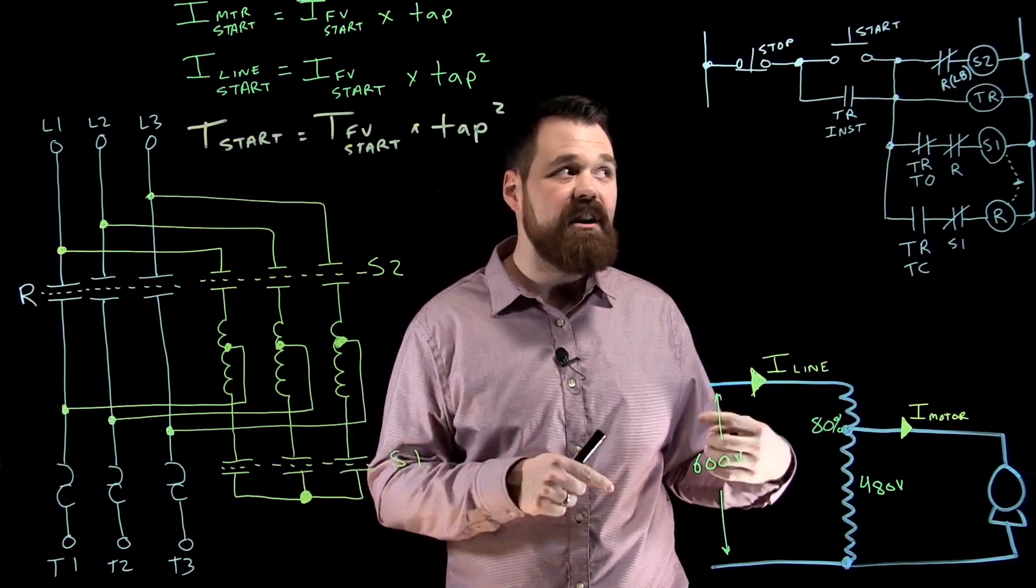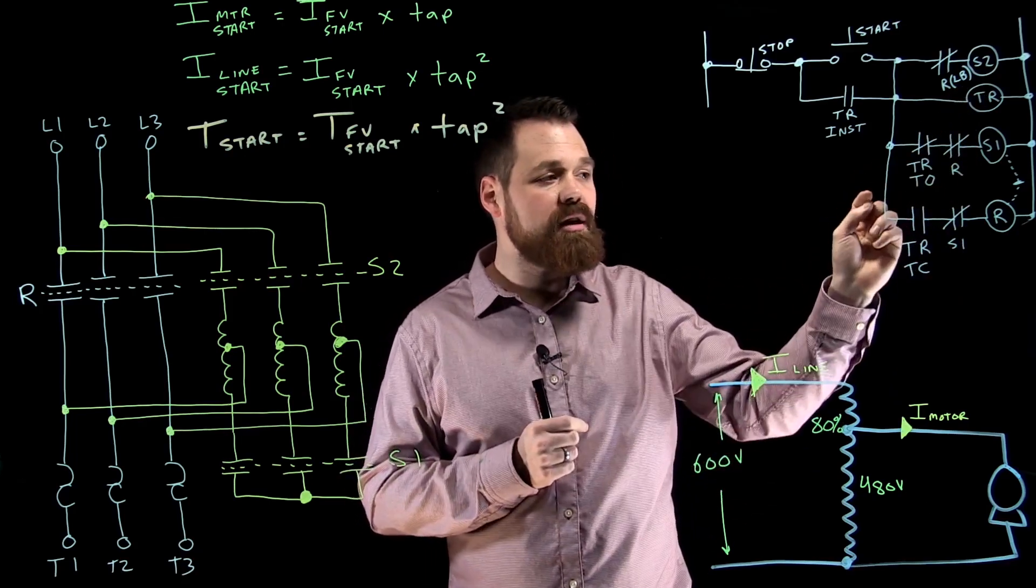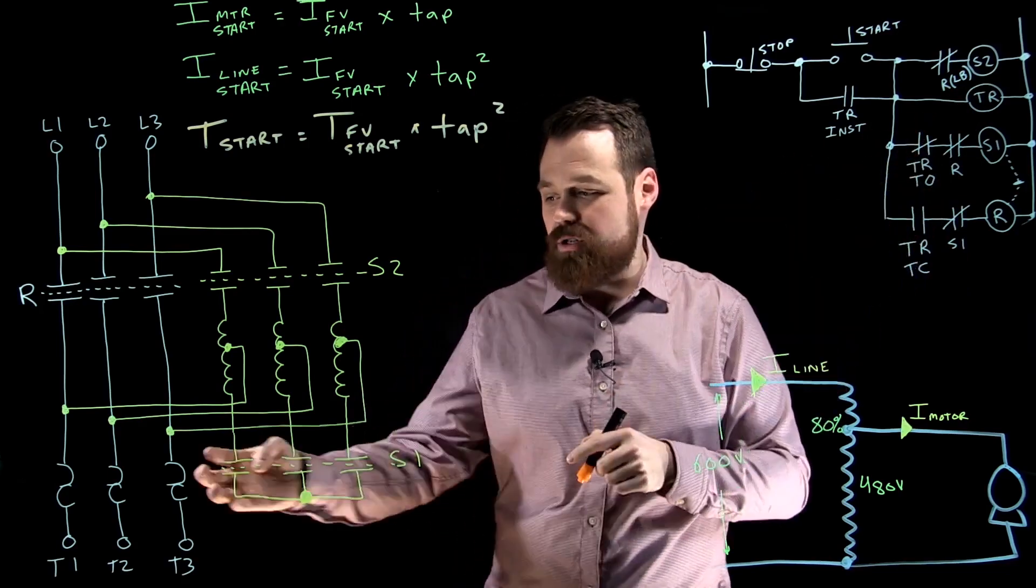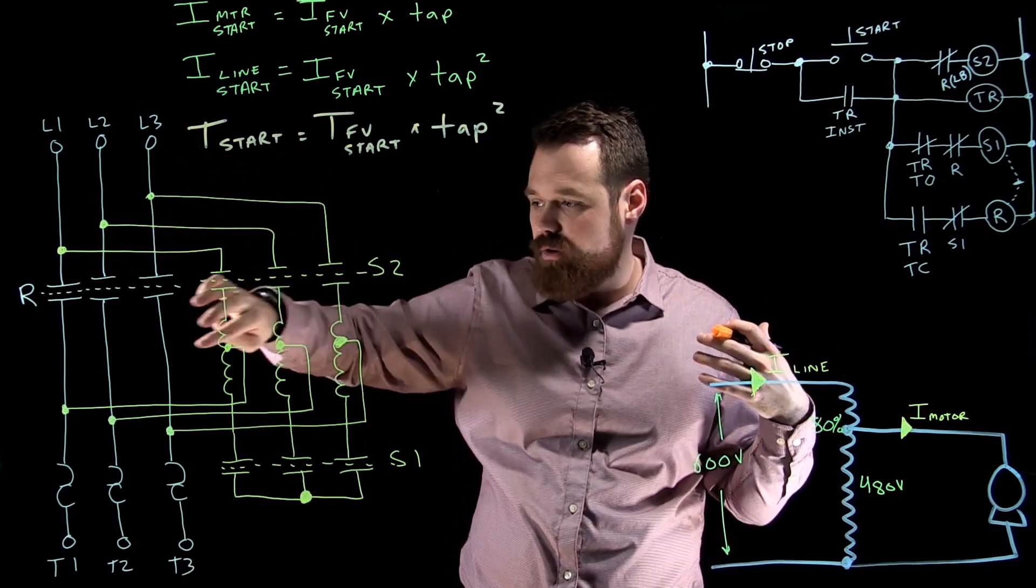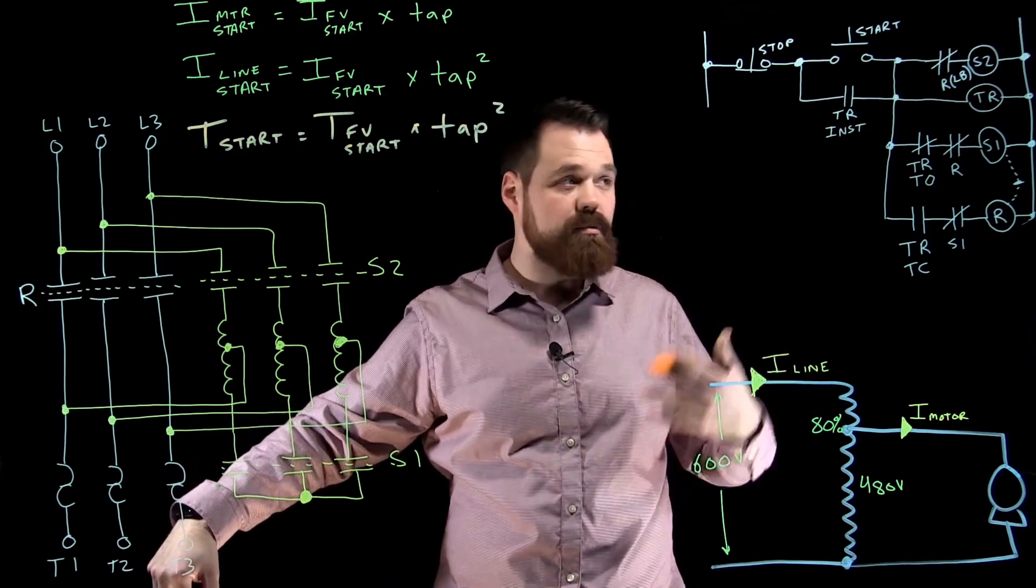When my timing has finished, my timing relay has counted, usually about two seconds, these sets of contacts are going to open, which removes the Y point on my transformer. This still allows current to flow through into the motor, but now no longer at a reduced voltage.